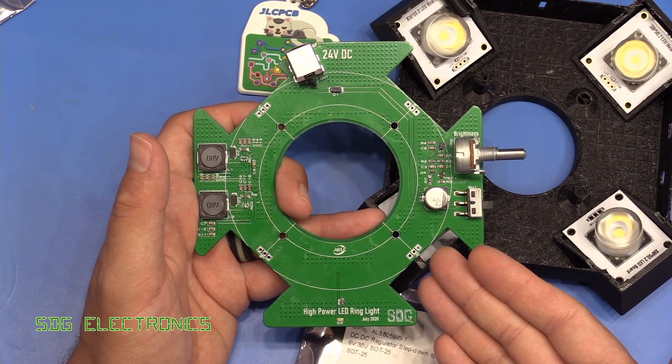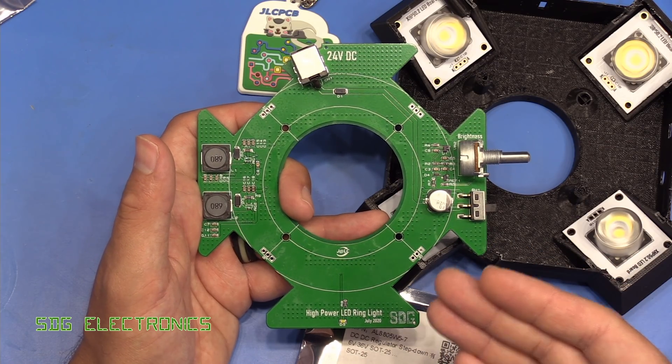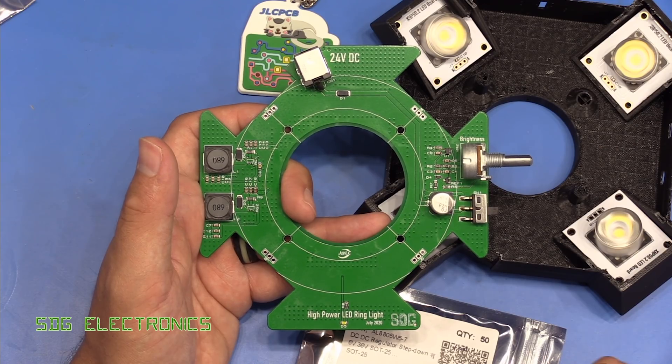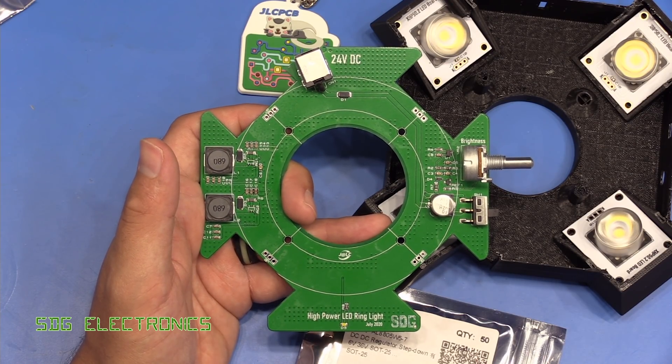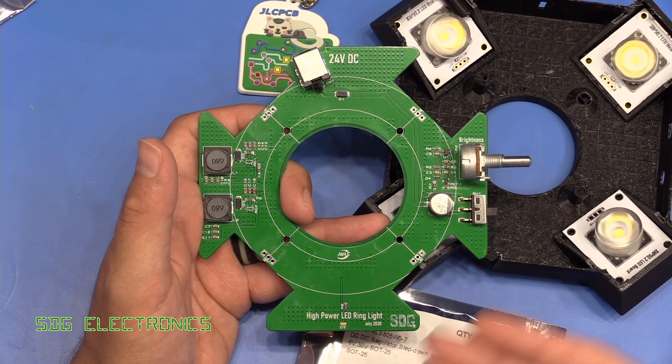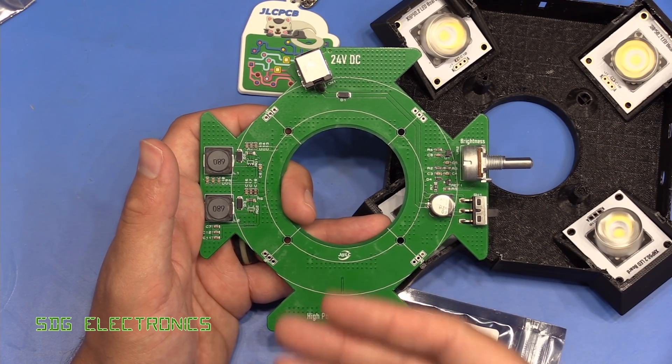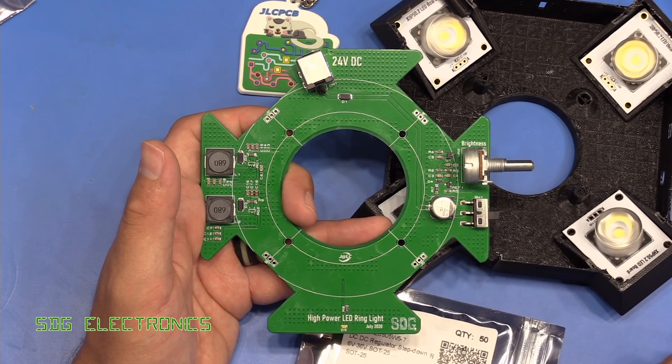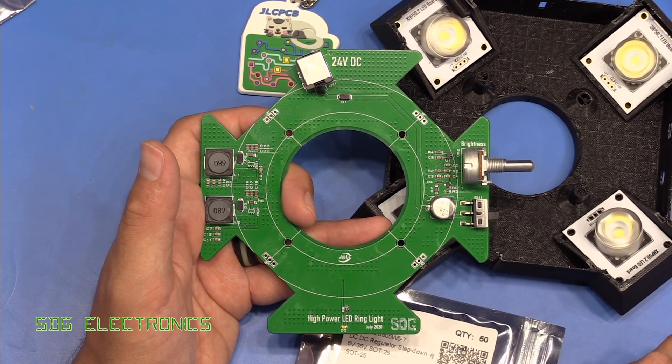And I think that's fairly fair. You've got to consider that this is a prototype service. And people could complain about all kinds of component failures where actually the fault is with their circuit and not with the component. And there's no way for JLCPCB to go through and check everyone's schematic and layout and make sure there's no mistakes made there. So I think offering back the value of those components is pretty fair.